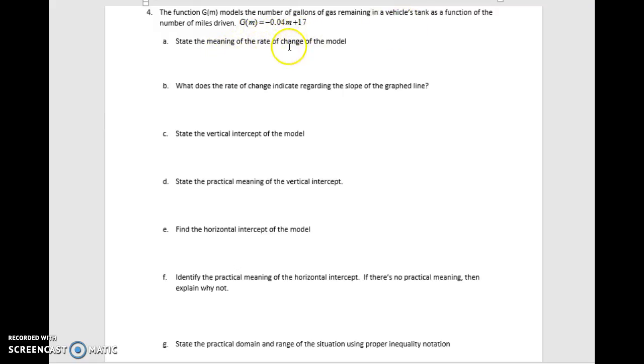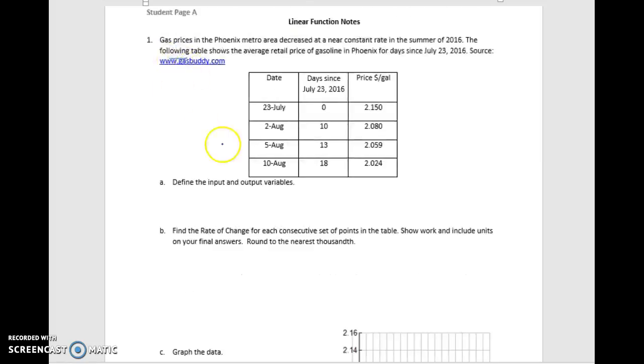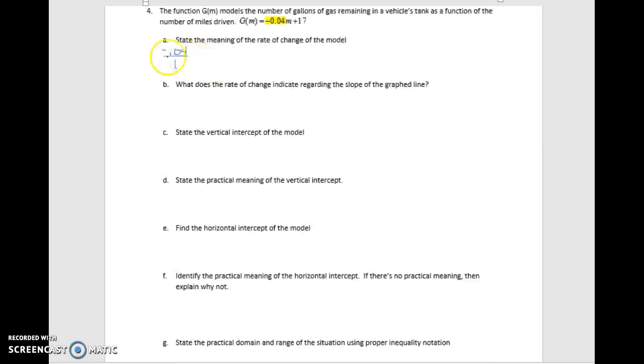So we want to state the meaning of the rate of change. And since we know this piece right here, the coefficient of the variable is the rate of change. And we also know that rate of change is negative 0.04 over 1.